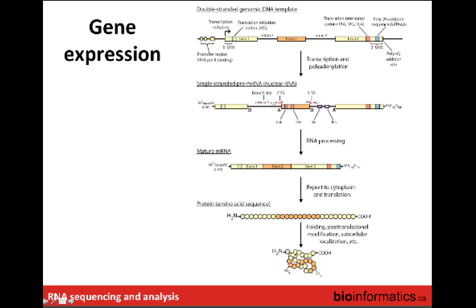We have a promoter region where transcription factors bind and transcription is initiated, a polyadenylation site, and translation initiation start and termination codons. This gets transcribed into a single-stranded pre-mRNA molecule where the introns are still in place. A whole other set of regulatory features controls how splicing happens to remove the introns and stitch the exons together to give us a mature mRNA sequence, which then gets polyadenylated, capped, and exported from the nucleus to the cytoplasm, where translation occurs to produce a protein sequence.